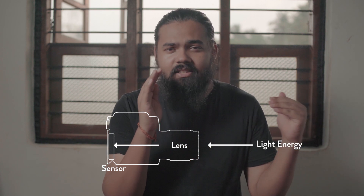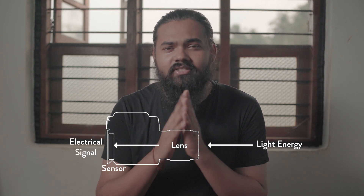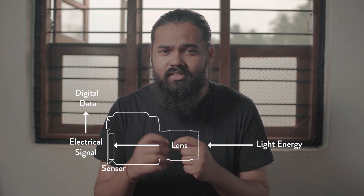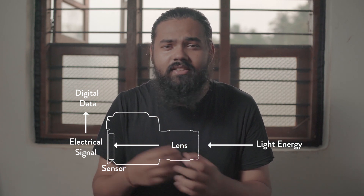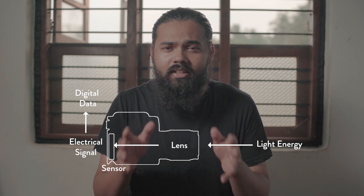To understand what ISO is, we first have to understand how an image is formed in a digital camera. In a digital camera, light or light energy passes through the lenses and hits the sensor to form the image. When this light energy passes through the lens and hits the sensor, it is converted into electrical signals or electrical energy. This electrical energy is then converted into digital data — the zeros and ones — which is saved into your memory cards or fed into the displays that you see. This is the process of how an image is formed in a digital camera. Where ISO comes into play is where the electrical signal is converted into the digital data.